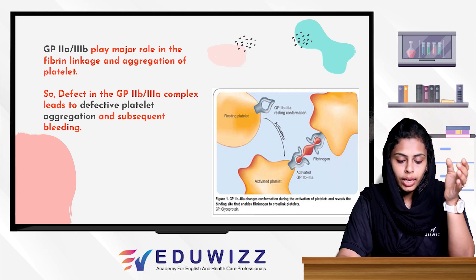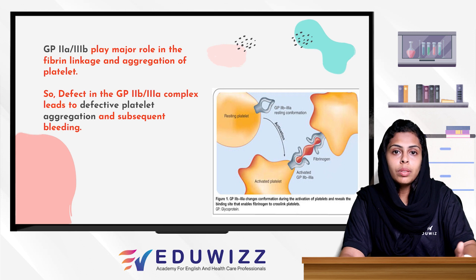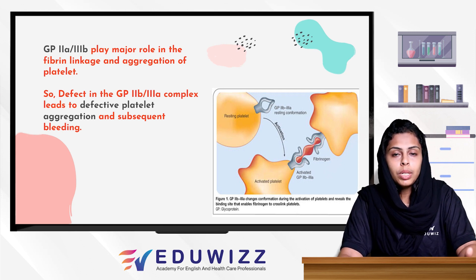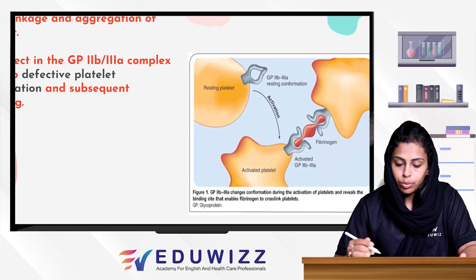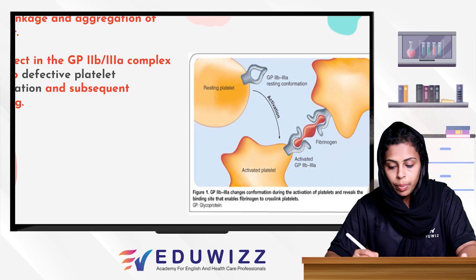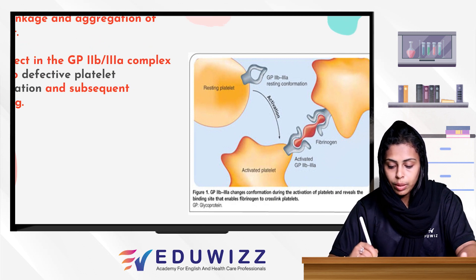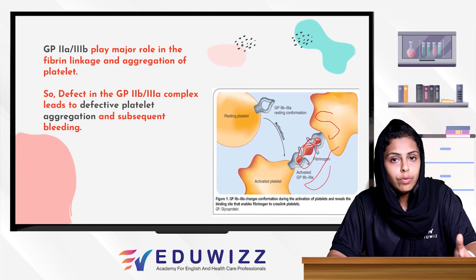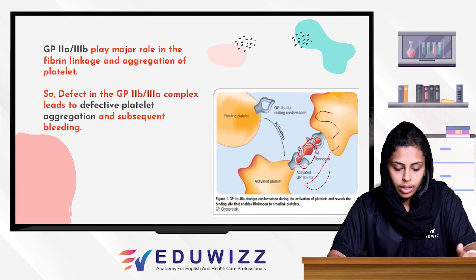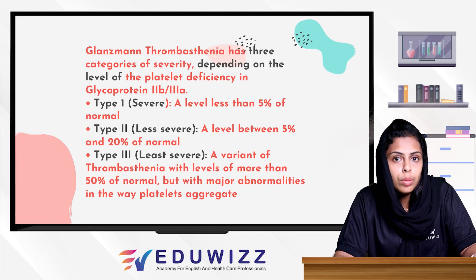We are going to talk about platelet aggregation and fibrin linkage formation. The receptor glycoprotein 2B3A plays a major role. In a resting platelet, glycoprotein 2B3A is in a resting format. Once the platelet is activated, it links to fibrinogen, enabling aggregation. When glycoprotein 2B3A is defective, there is impaired aggregation and subsequent bleeding.